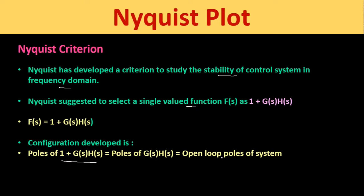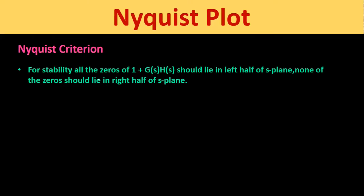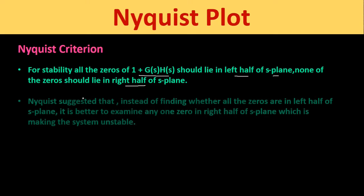The zeros of the characteristic equation 1 + G(s)H(s) will be equal to the closed-loop poles of the system. For stability, all the zeros of 1 + G(s)H(s) should lie in the left half of the s-plane; none of the zeros should lie in the right half of the s-plane. This we already studied in the previous classes.